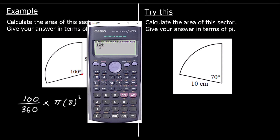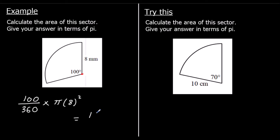So 100 over 360, times pi, times the radius squared. And we get 160 over 9 pi. The radius was in millimeters, so the area will be in millimeters squared.